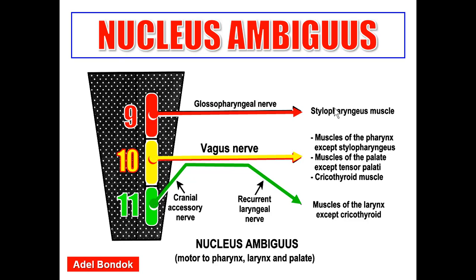The upper part supplies stylopharyngeus muscle through the glossopharyngeal nerve. The middle part supplies three groups: muscles of the pharynx except stylopharyngeus, muscles of the palate except tensor palatii, and the cricothyroid muscle — the tensor of the vocal cords. The lower part gives fibers to the cranial accessory nerve, distributed with the vagus through the recurrent laryngeal nerve, to muscles of the larynx except cricothyroid.